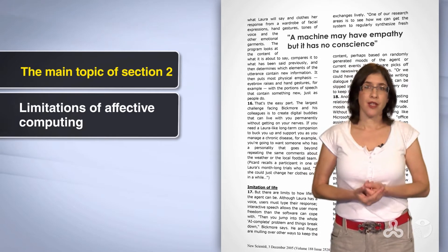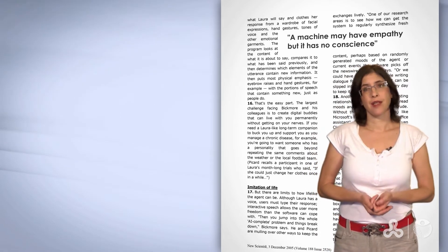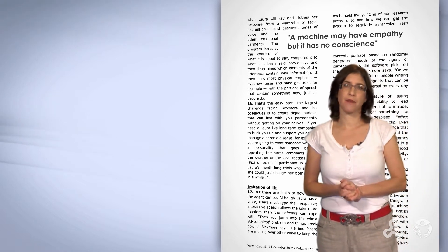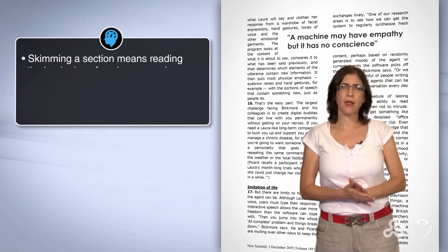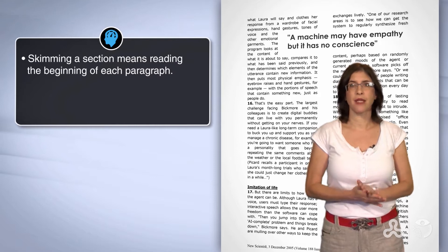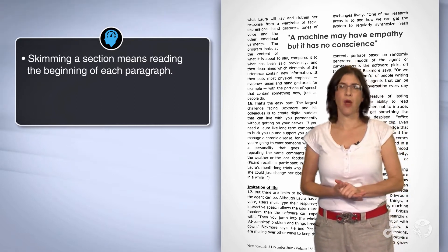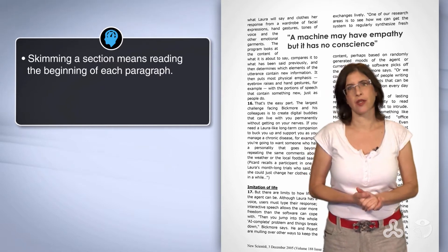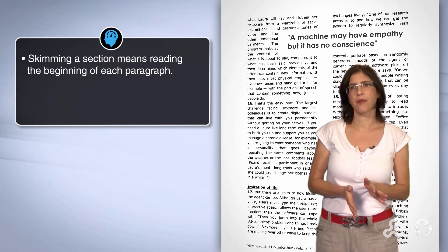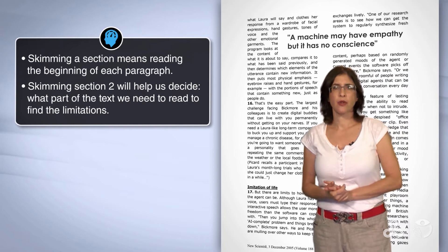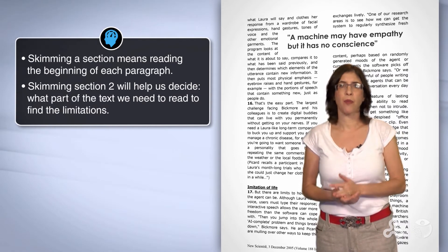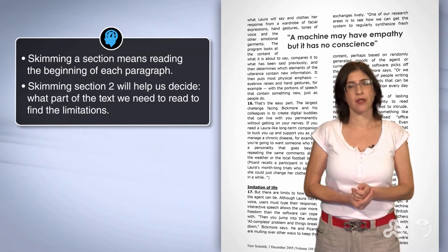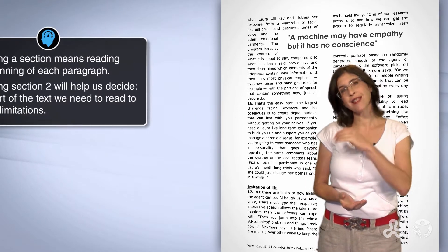So now we have a main topic of the section: limitations of effective computing. To find out what the limitations are, we need to read the text. Before we do that, let's do some skimming for this section. Remember, skimming a section means reading the beginning of each paragraph. This is a long section and we do not need it all. Skimming section 2 will help us decide what part of the text we need to read to find the limitations.